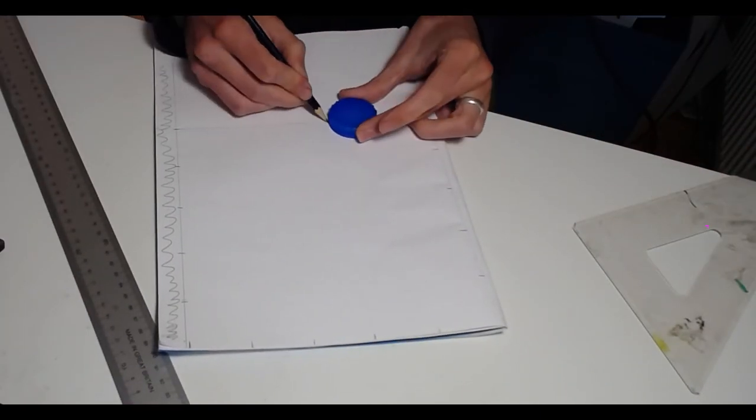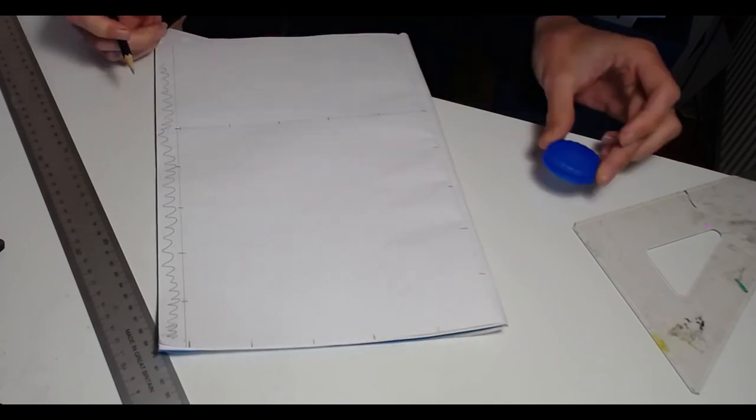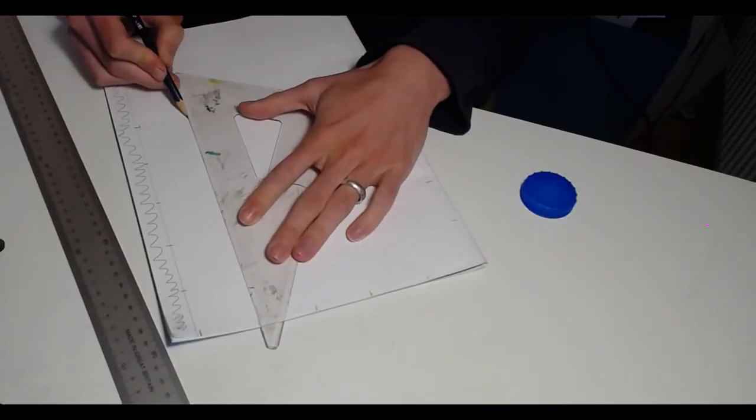I'm going to draw a horizontal line across the A4 paper and then I'm going to use a ruler and connect all of these up.